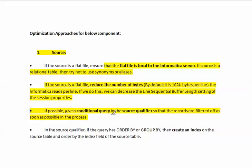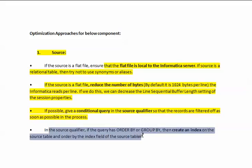Write down the conditional filter in the source qualifier. In the source qualifier, if the query has order by or group by, then create an index on the source table and order by the index field of the source table. It will help you to access the data fast from the source.